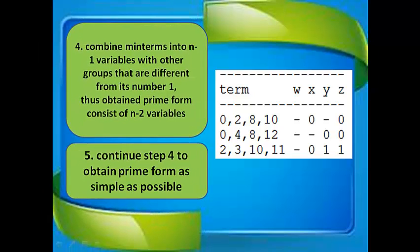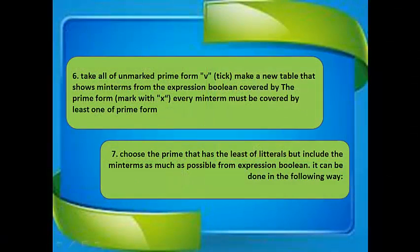Step 5: Continue step 4 to obtain prime forms as simple as possible. Step 6: Take all unmarked prime forms. Make a new table that shows which minterms from the Boolean expression are covered by each prime form, marked with x. Every minterm must be covered by at least one prime form.